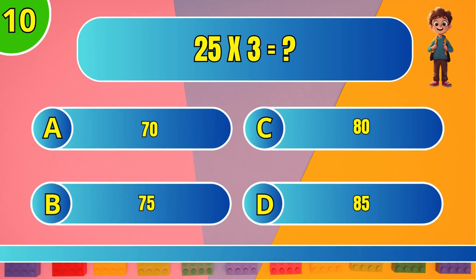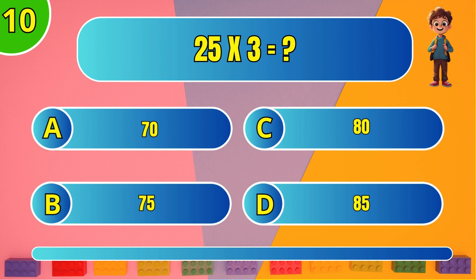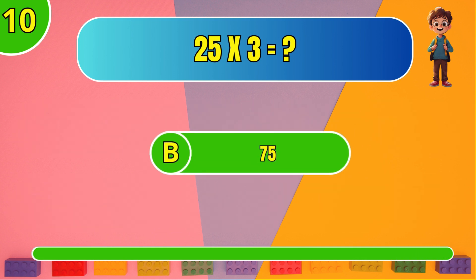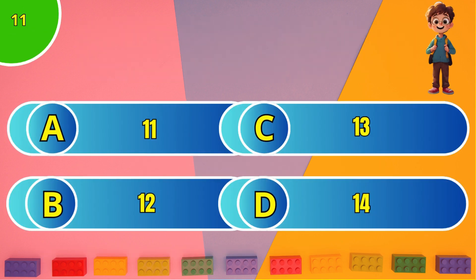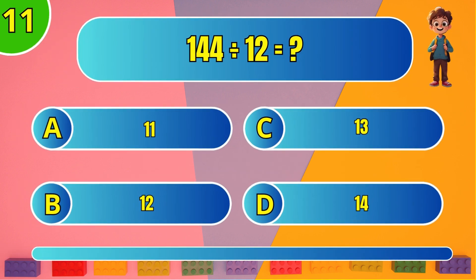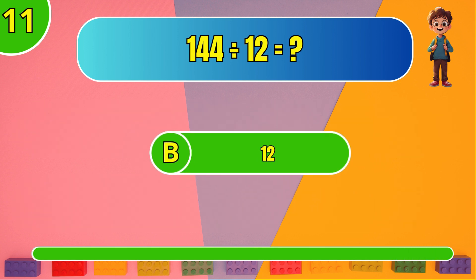What is 25 times 3? C: 75. What is 144 divided by 12? C: 12.